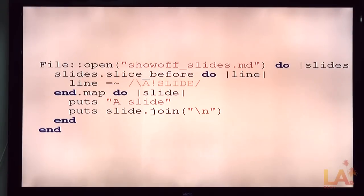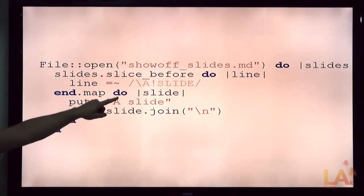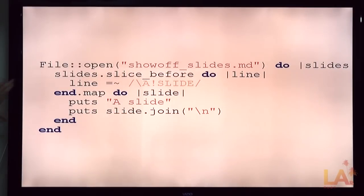The slides for showoff are a big markdown file separated by this bang slide. So this code opens up a slides file and then slice before each bang slide. Which is the same kind of idea. We're going to group it into sublists. But the trigger for starting a new sublist is that this block returns true. So whenever we get a line that starts bang slide, that's a new slide. Start a new list for it. And then we output them. While we output them, I'm not sure.